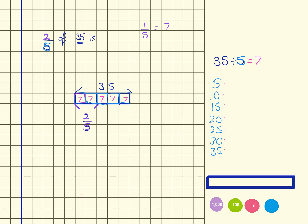And quite clearly from the image we can see that what I'm going to need to do is multiply the 7 by 2. And the 2 is the same 2 that I've got up here because there's 2 fifths. And that gives me 14. So that tells me that 2 fifths of 35 is 14.